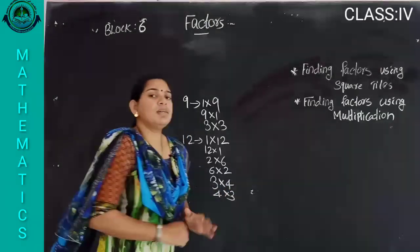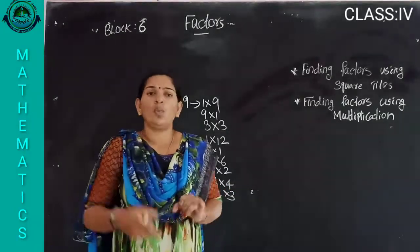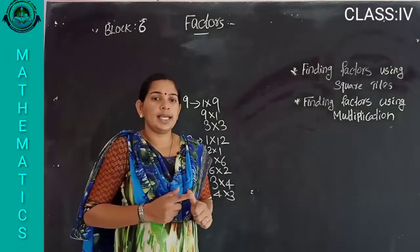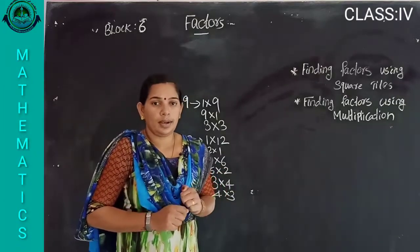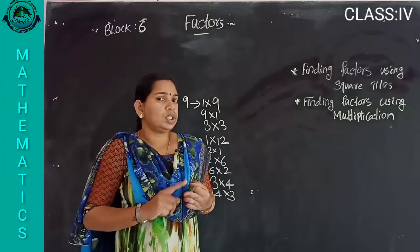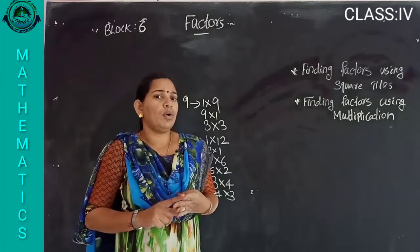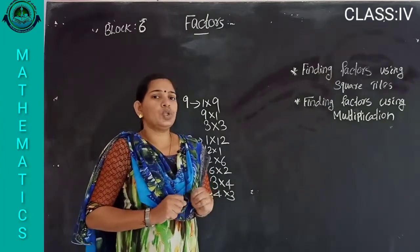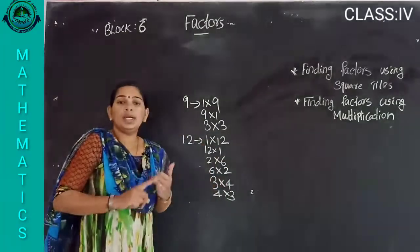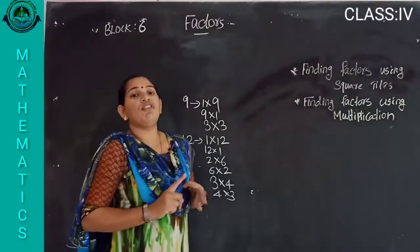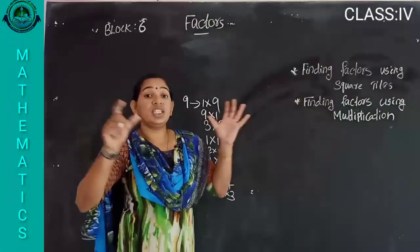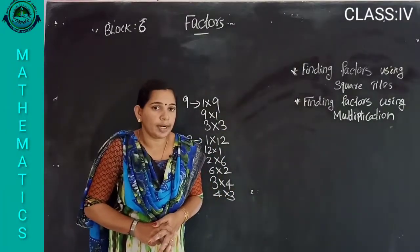Which are the numbers we are using here? One, two, three, four, six, twelve. So these are the factors of twelve.